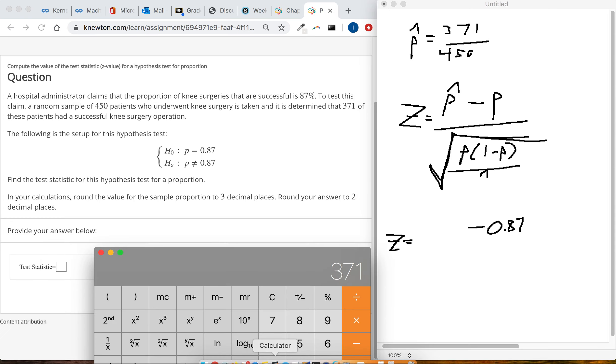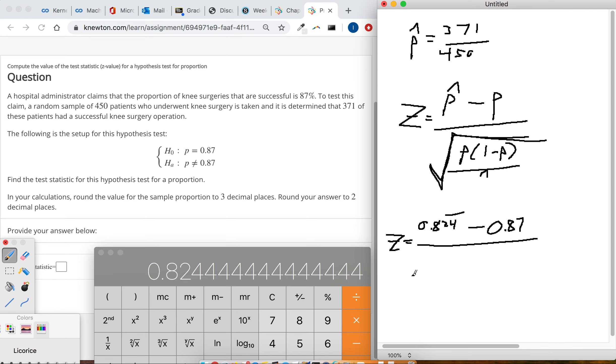So 371 divided by 450 gives us a sample proportion of 0.824 repeating. Oh, that's a bad square root. But plug in 0.87, population proportion. And I'm kind of simplifying here: 1 minus 0.87 is 0.13, and then n, the sample size, is 450.